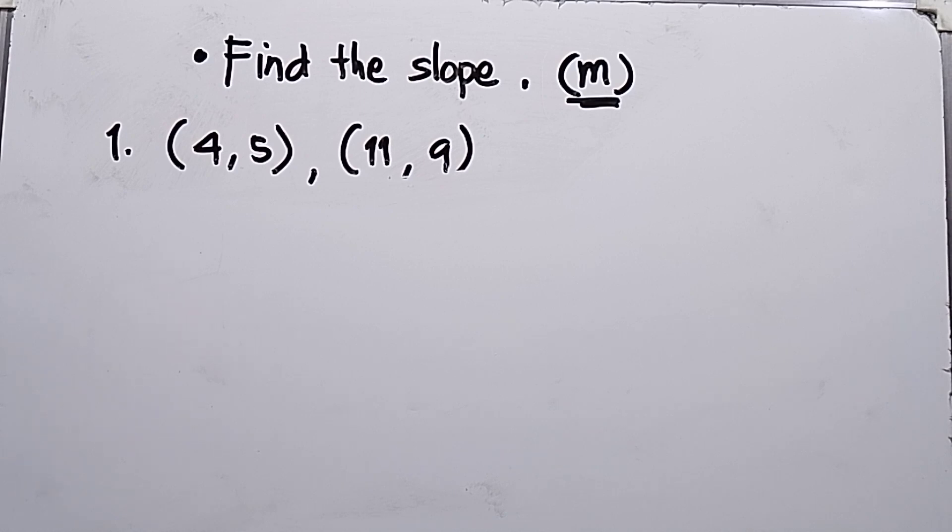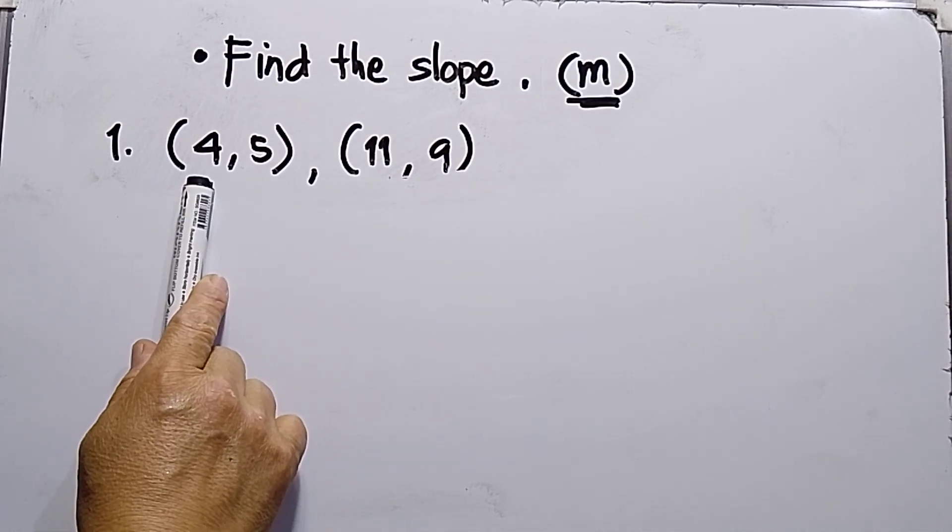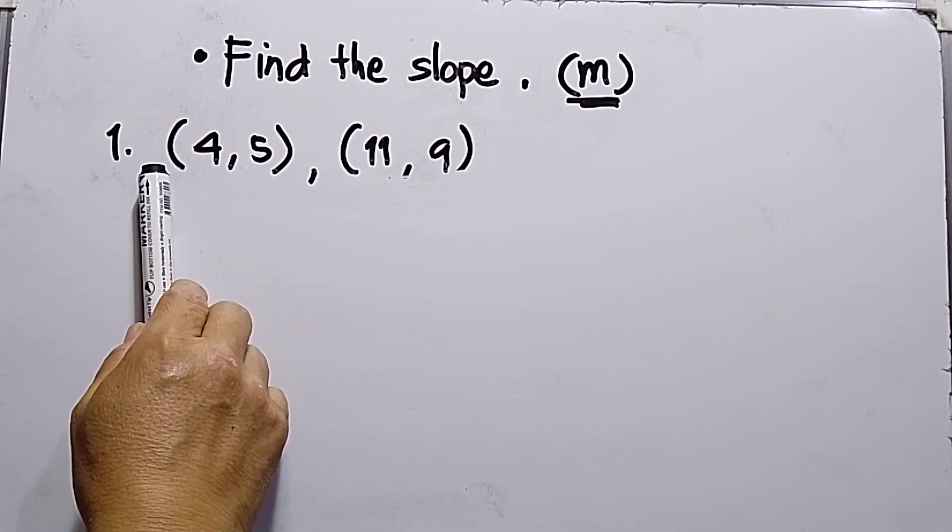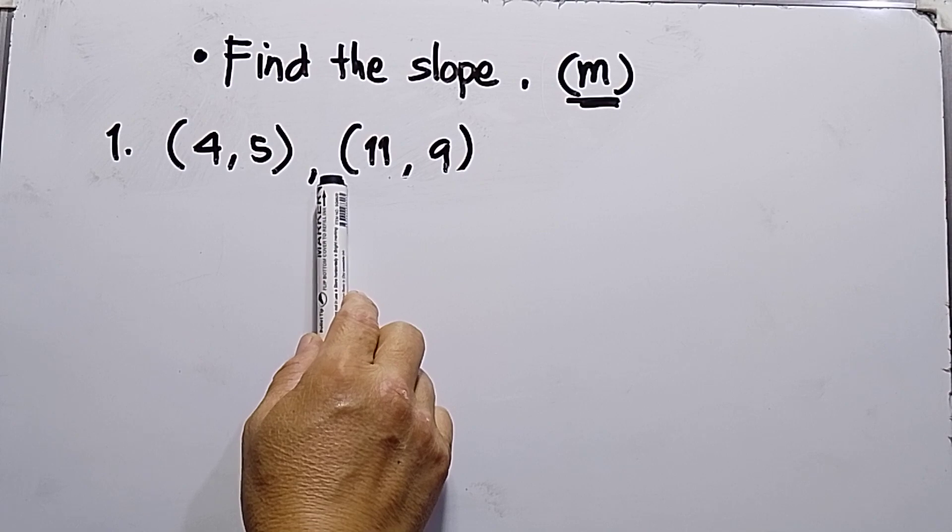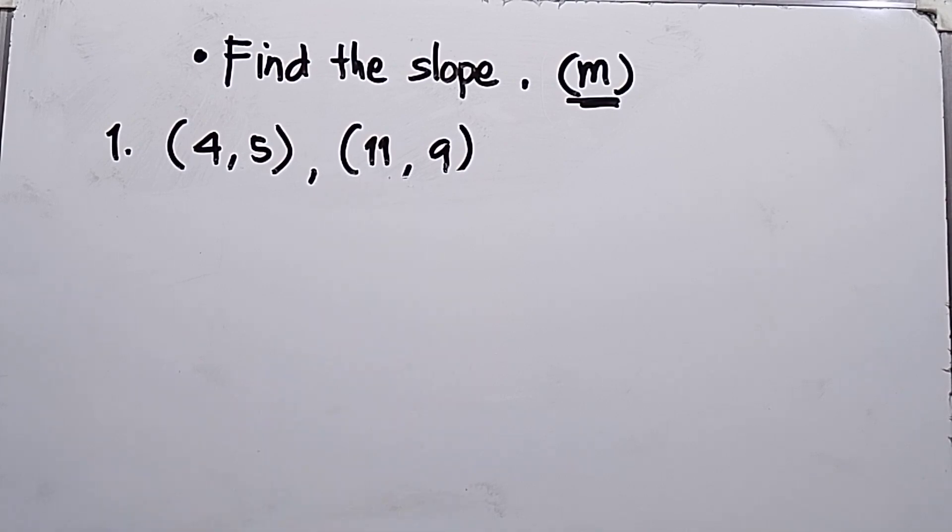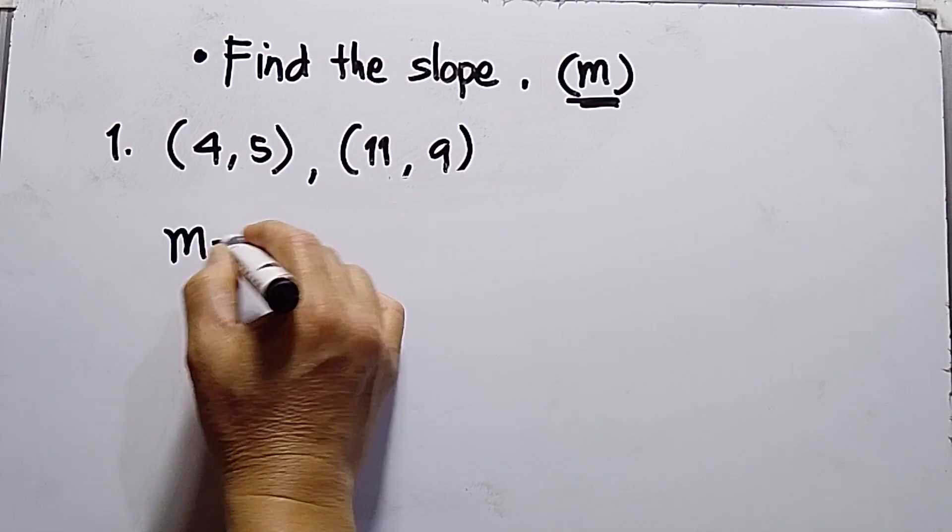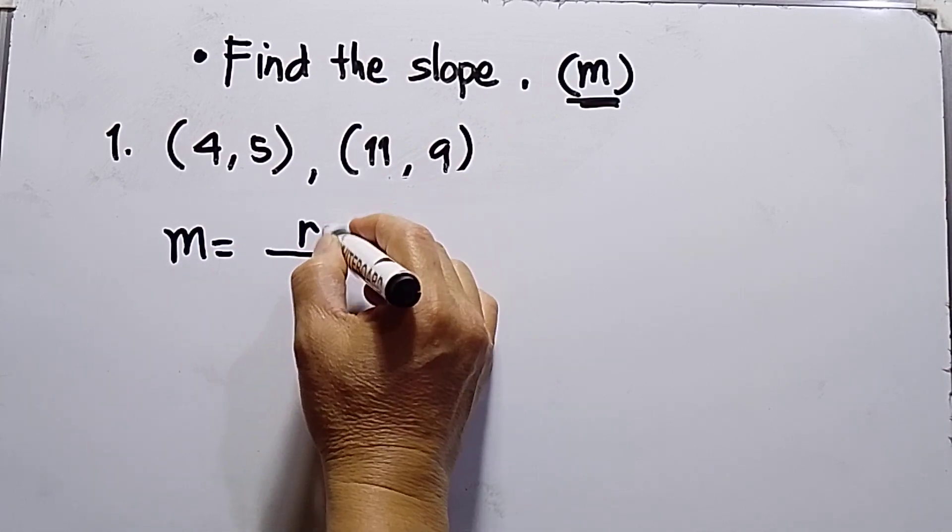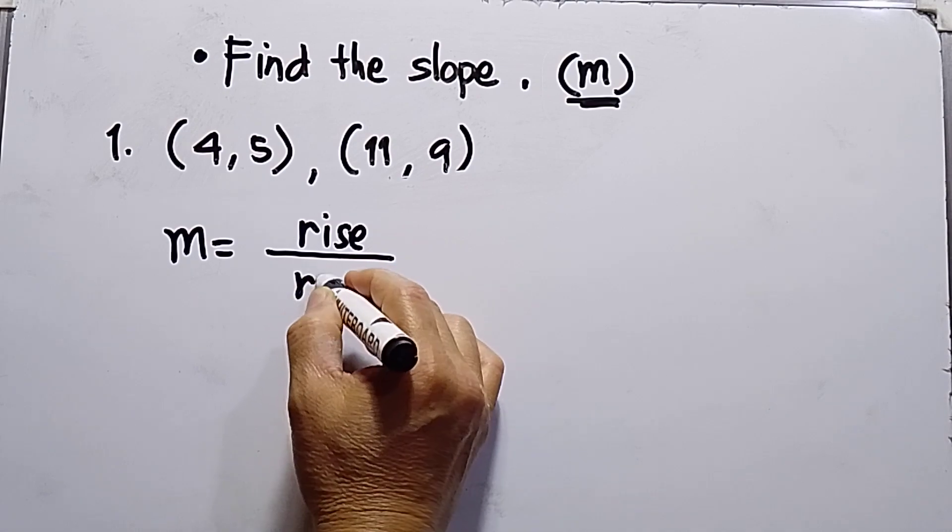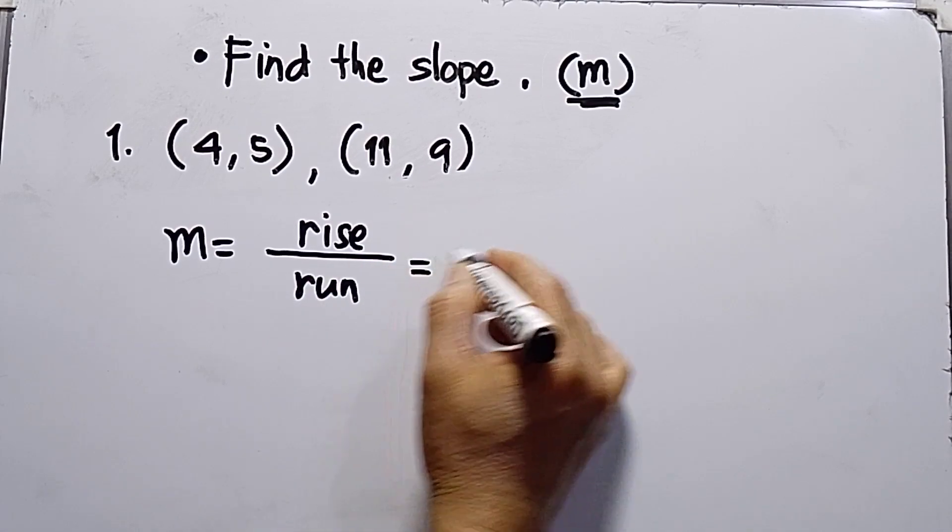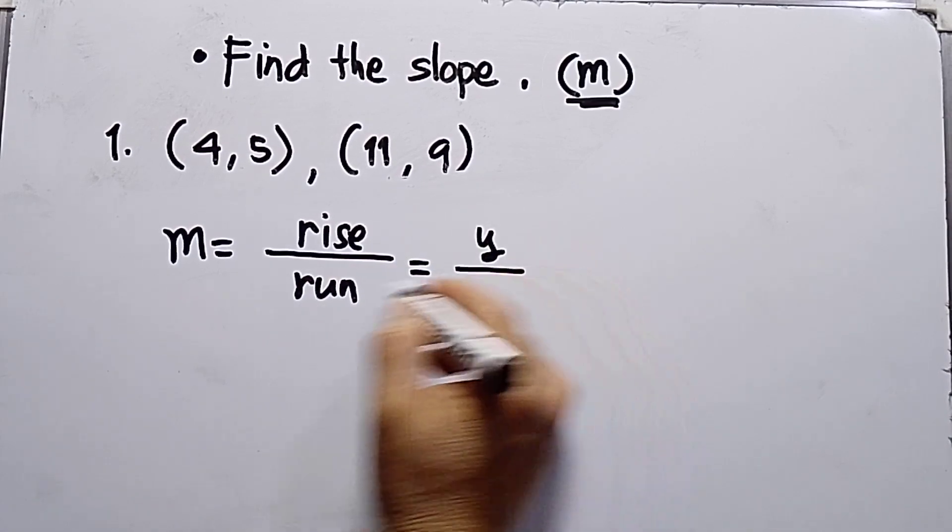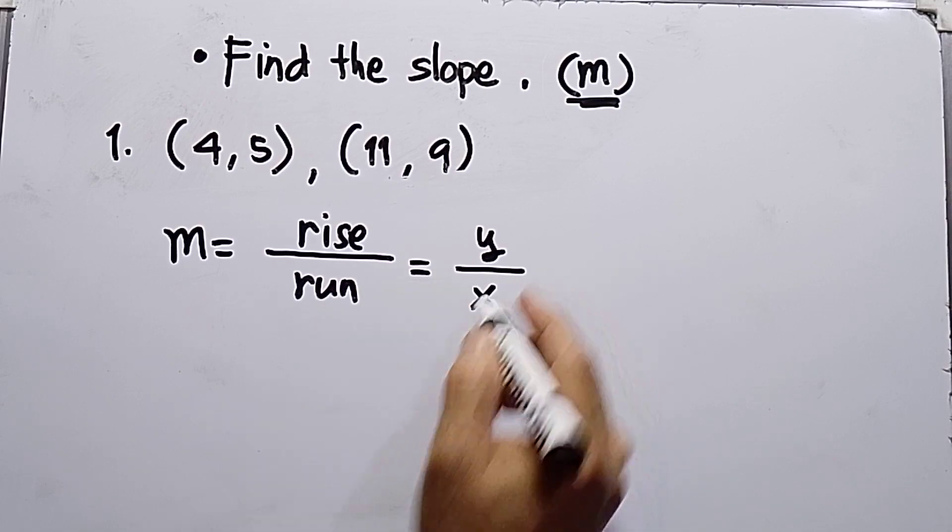So I have here number 1, 4 and 5. This is my point 1 and then the point 2 is 11 and 9. So the formula for finding the slope, M is equals to rise over run. Meaning rise will be Y then run is X.